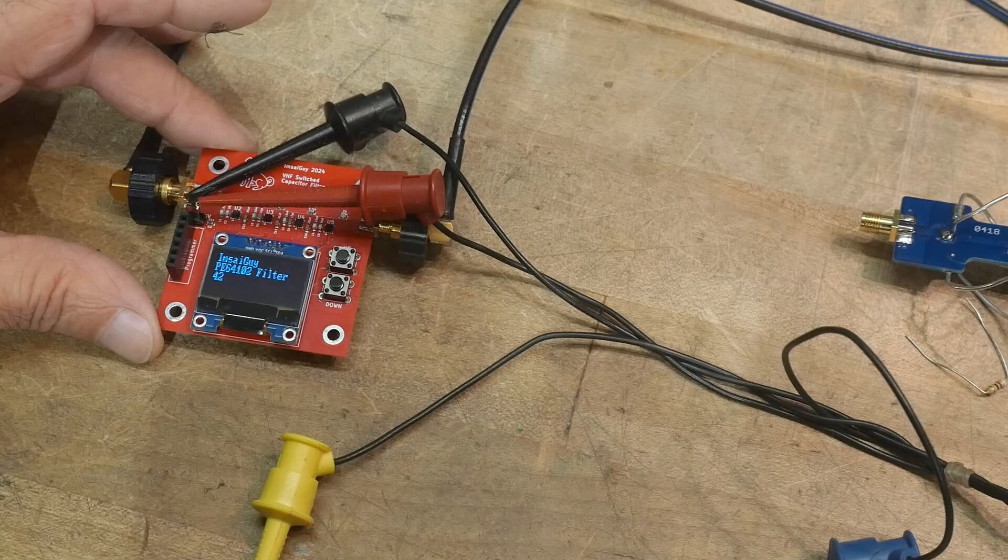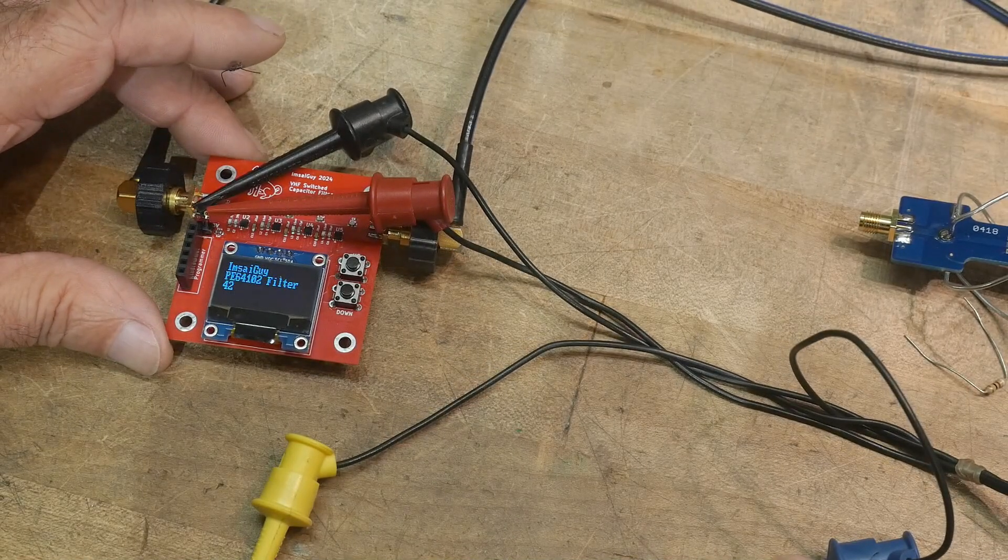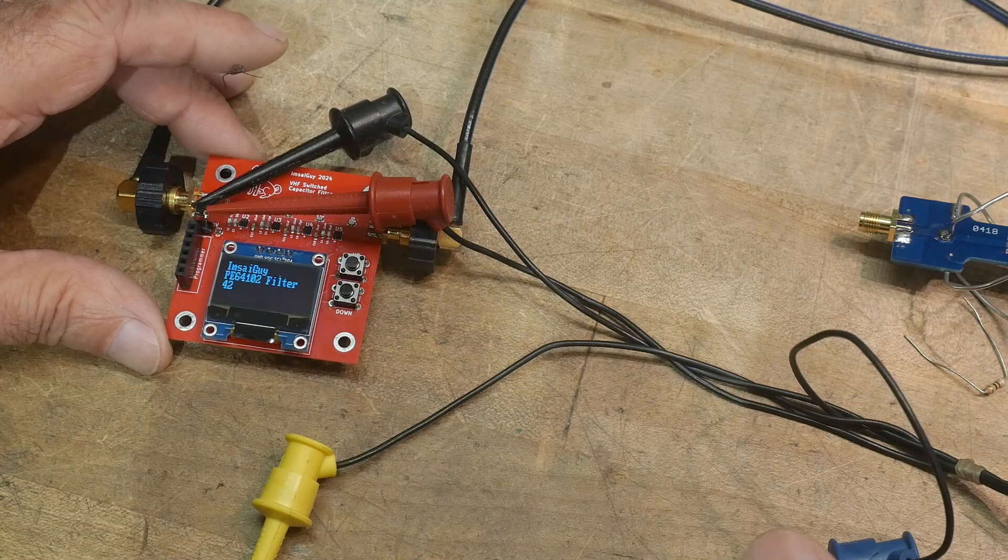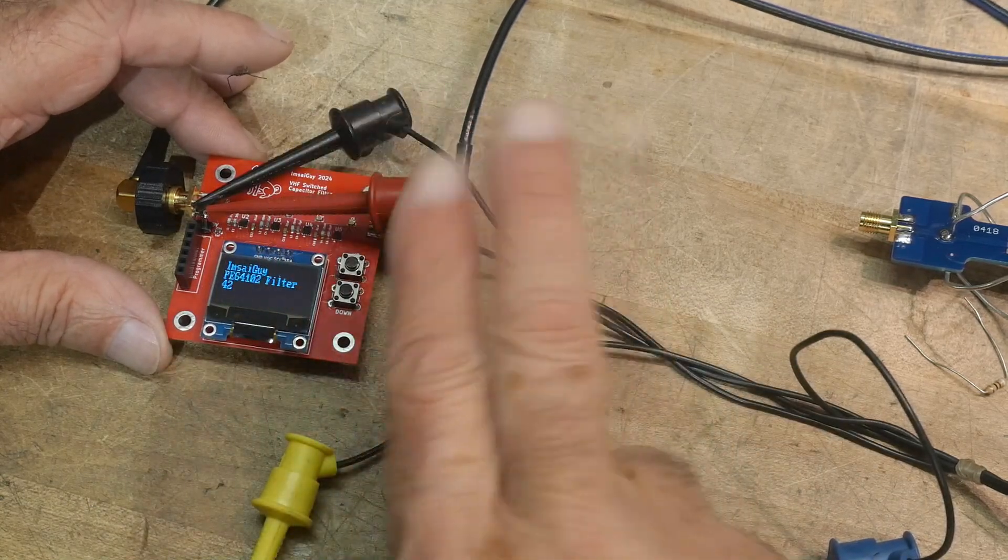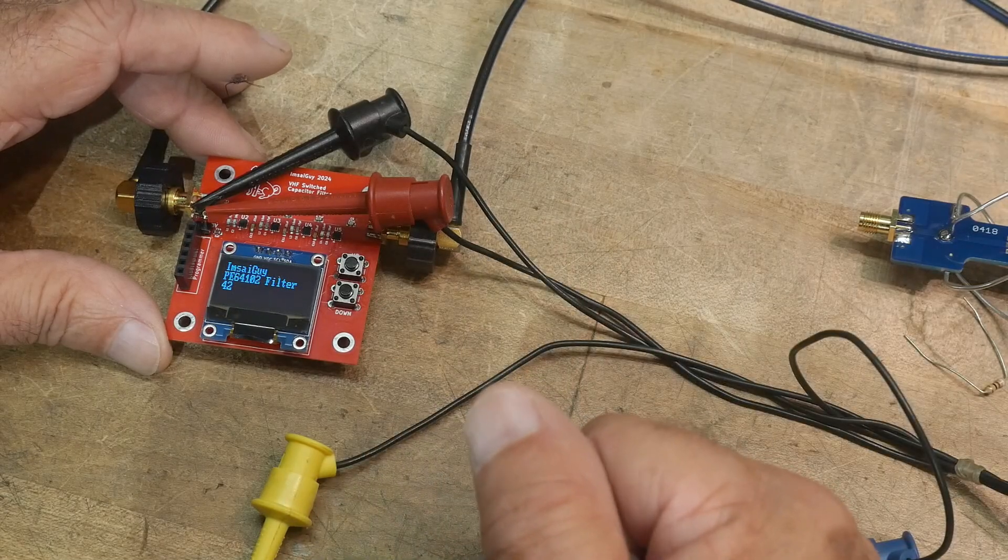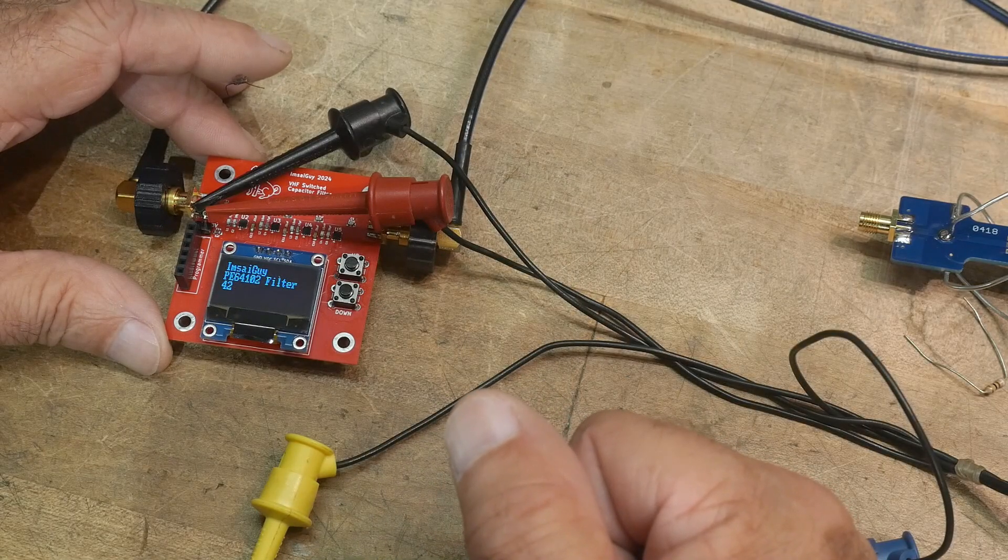There is a command called serial shift, I believe that's the Arduino command. You tell it which two pins are clock and data, and then it shifts a byte out.